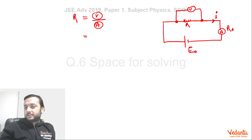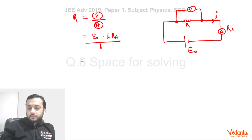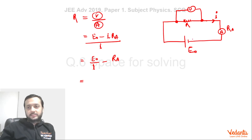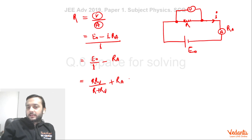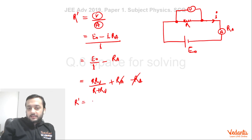So the measured R-dash equals (E₀ − I·RA) / I = E₀/I − RA. Now E₀/I is the equivalent resistance of the circuit. R and RV are in parallel, with RA in series: R_eq = R·RV/(R + RV) + RA. Subtracting RA cancels it out, leaving R-dash = R·RV/(R + RV). With R = 1000 and RV = 50,000: R-dash = 1000 × 50,000 / 51,000 ≈ 980.2 ohms, matching option D.